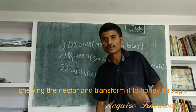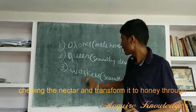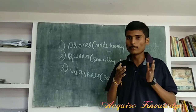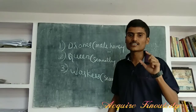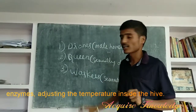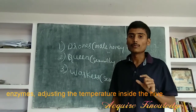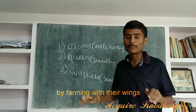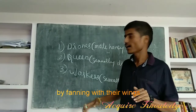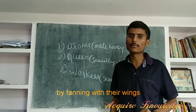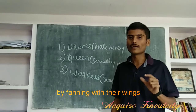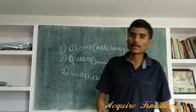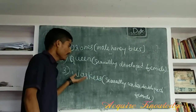The nectar is converted into honey by using enzymes and by adjusting temperature. The workers adjust the temperature in the hive by fanning using their wings, controlling the temperature inside the hive. This is the work of the workers.